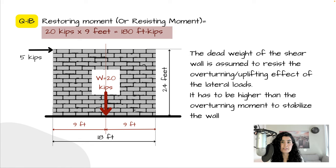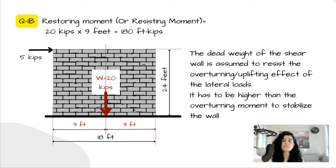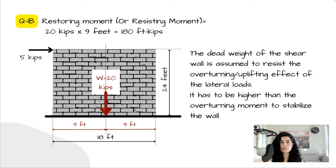To calculate the restoring moment, multiply the wall's weight of 20 kips by 9 feet — the distance from the center of mass to the moment point — giving 180 foot-kips. The dead weight of the shear wall is assumed to resist the overturning or uplifting effect of the lateral loads. It has to be higher than the overturning moment to safely stabilize the wall. Our overturning moment was 120 foot-kips and our restoring moment is 180 foot-kips, giving a 60 foot-kip difference — meaning we have a very stable wall.